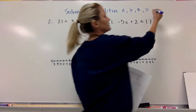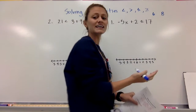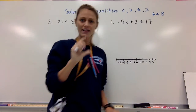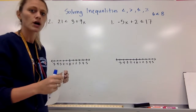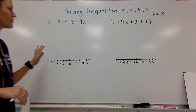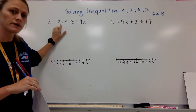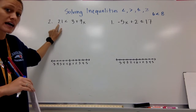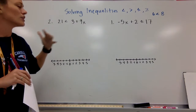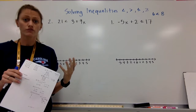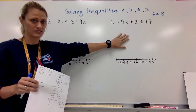For example, if you had a six and an eight, the eight is obviously bigger, so the alligator mouth would open toward the eight. On your papers, you've got a couple at the top that I'm going to do with you as examples. We're going to look at the second one to begin with. We've got 21 is less than 3 plus 9x. You solve these very similarly to how you solve an equation — pretty much all the steps are the same, except for one catch that we won't see until the second example.